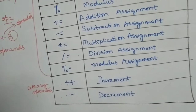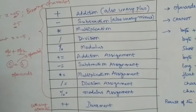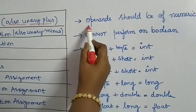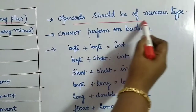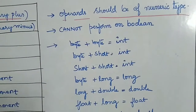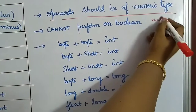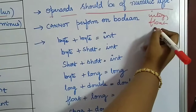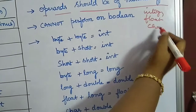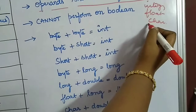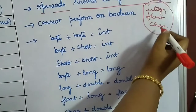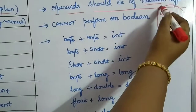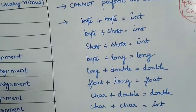There are some rules you should know before applying these operators in an expression. The first rule is that operands should be of a numeric type. The numeric data types include integral types, floating types, and also char, since char is a subset of integer. On all these three types you can apply all arithmetic operators.